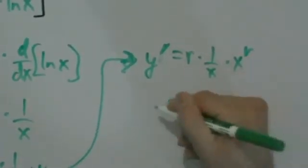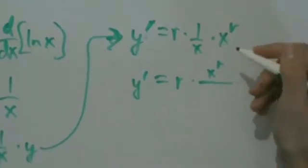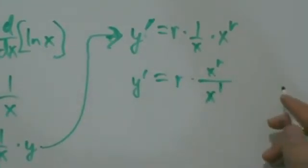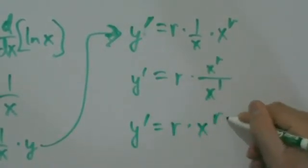Now what we have is y prime equals r times x to the r divided by x to the first, right? So that means y prime equals r times x to the r minus 1.